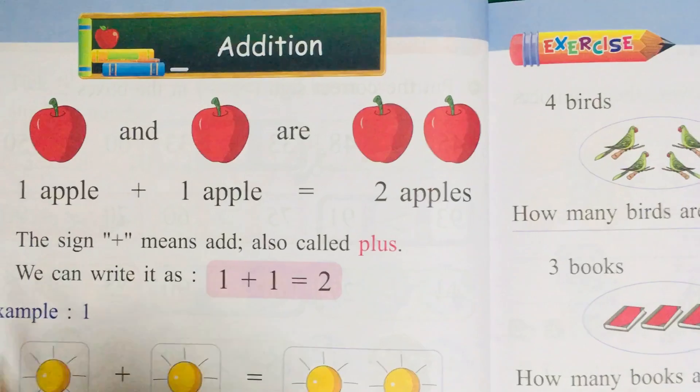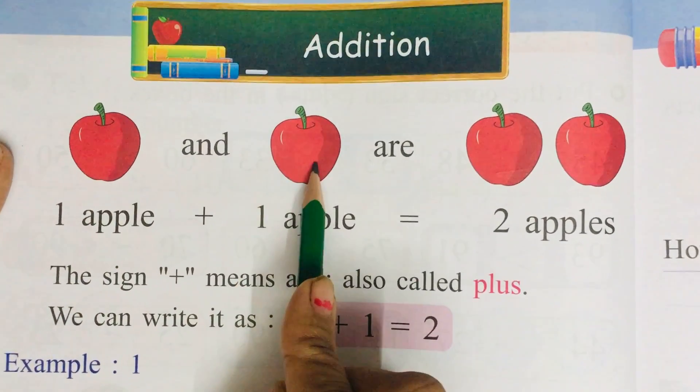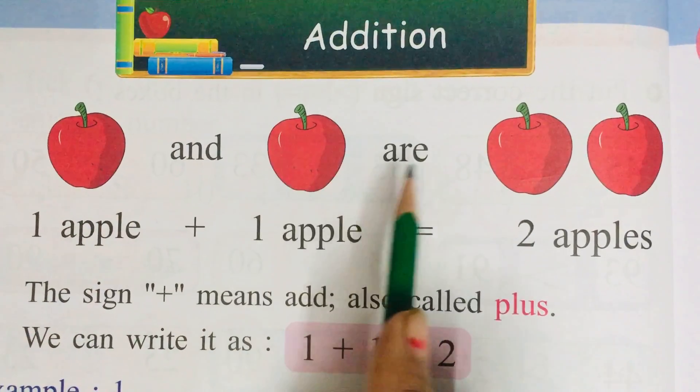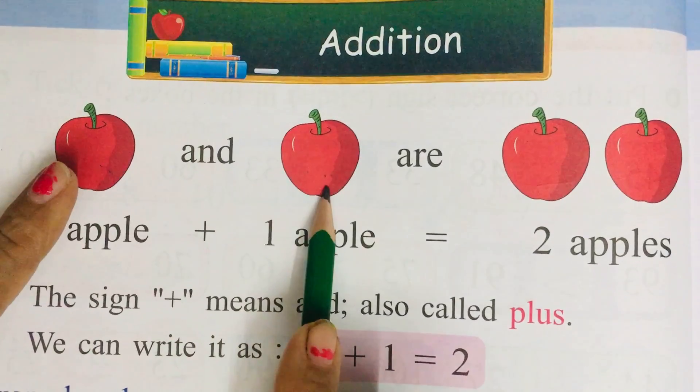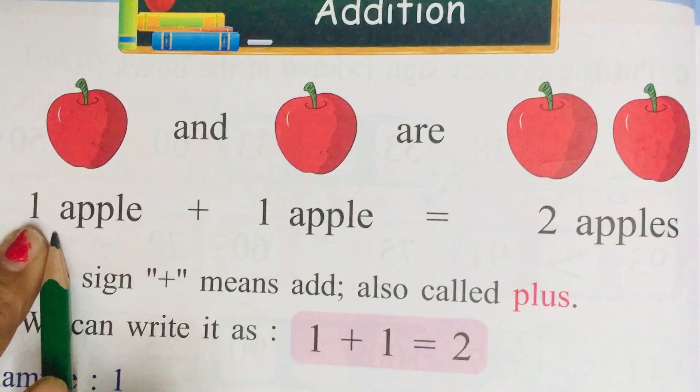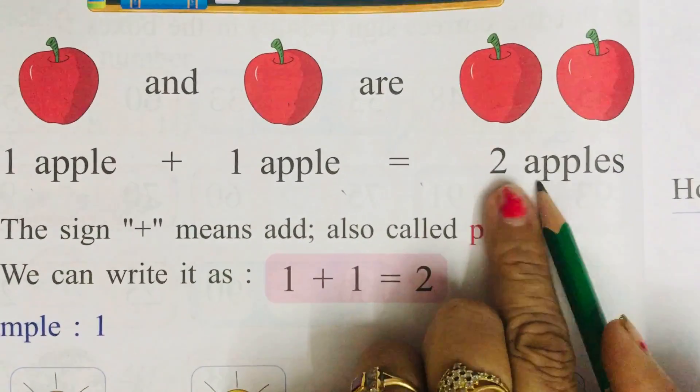How will we add? See, there is 1 apple plus 1 apple. Count 1 and 1. 1 plus 1 equals to 2. So what will we write over here? 2. See, 1 apple plus 1 apple equals to 2 apples.